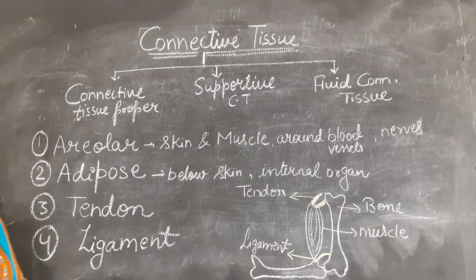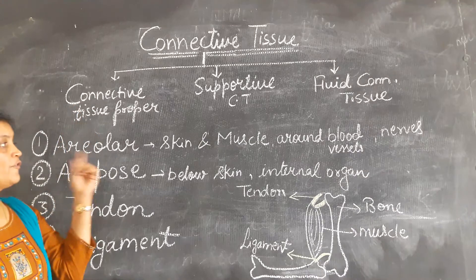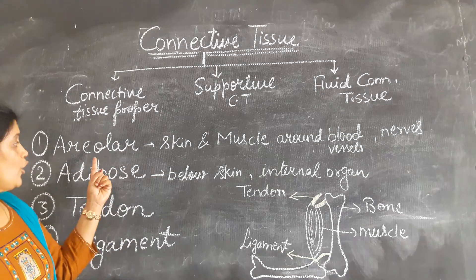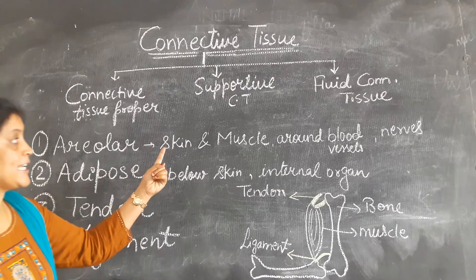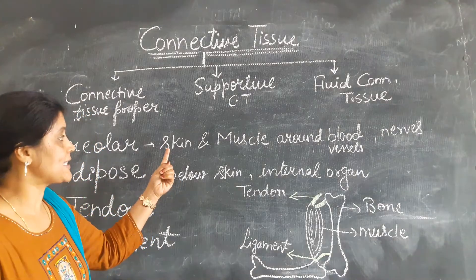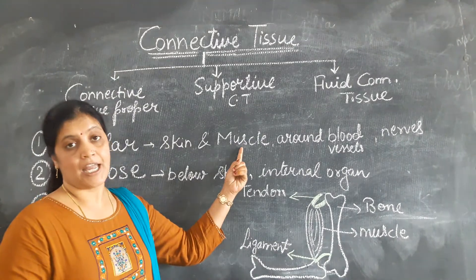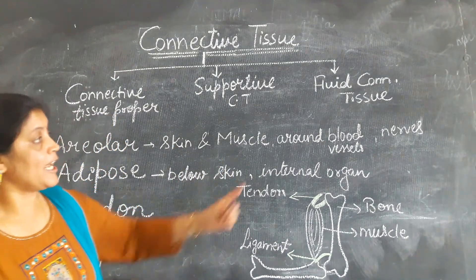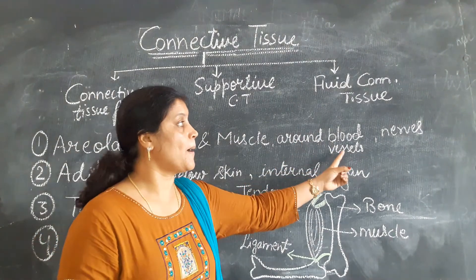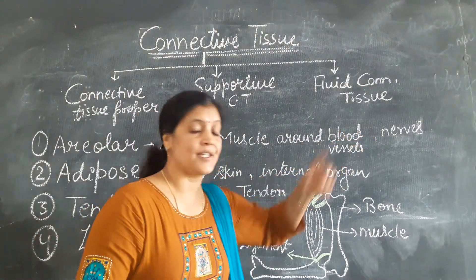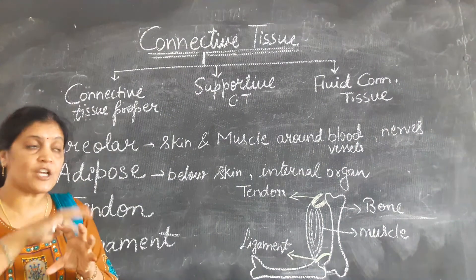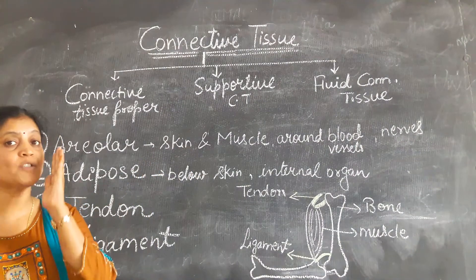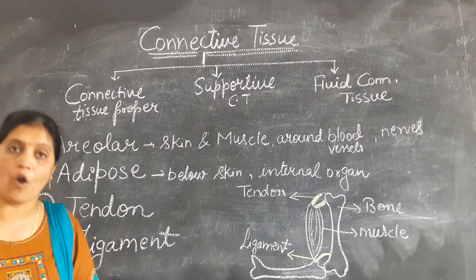Let's begin with areolar connective tissue. Areolar connective tissue is present in the skin and muscles — specifically between the skin and muscles, and also around the blood vessels and nerves. That means it is connecting all these parts, so its main function is to support all the internal organs.